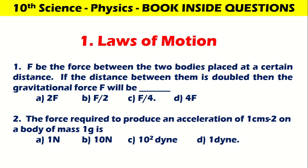This is book back, one more question. Then we will go to book inside question. F be the force between the two bodies placed at a certain distance. If the distance between them is doubled, then the gravitational force will be F/4. The force required to produce an acceleration of 1 cm/s² on a body of mass 1 gram is 1 dyne.